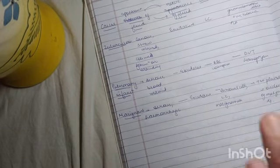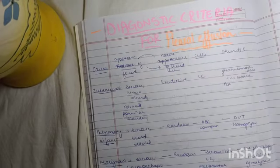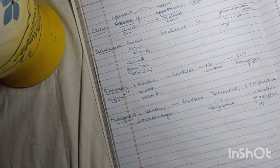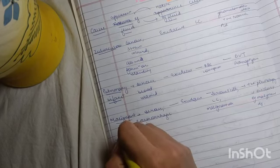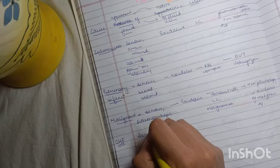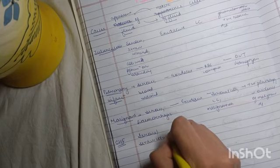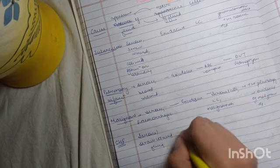These are basically the exudative ones. Now coming to the transudative. Congestive heart failure. In congestive heart failure, we will see serous and straw colored fluid. It is transudate.